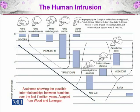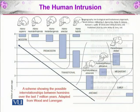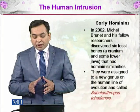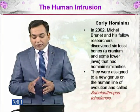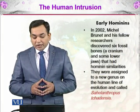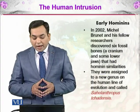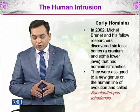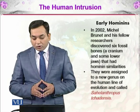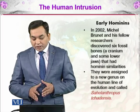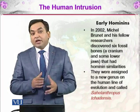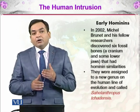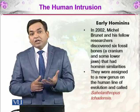In this topic we will be discussing up to the pre-modern. Regarding early hominins: in 2002, Michael Brunet and fellow researchers discovered six fossil bones — a cranium and some lower jaws — that had hominin similarities. These were assigned to a new genus of the human line of evolution called Sahelanthropus tchadensis, and they provided evidence of early hominins.